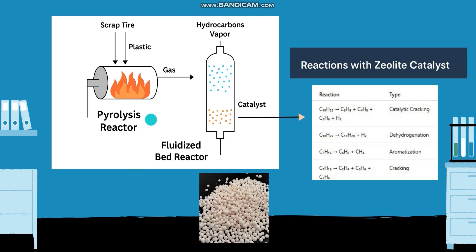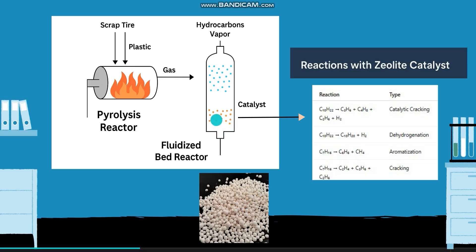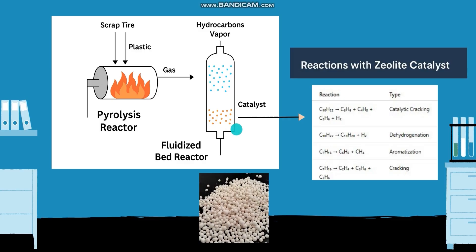The vapor from the pyrolysis reactor enters the fluidized catalytic bed reactor. In the absence of oxygen, the vapors are not burned; instead, they contact the surface of the catalyst. The catalyst contains active sites on its surface that break long-chain hydrocarbons into smaller chain hydrocarbons. These smaller molecules then desorb from the catalyst and proceed to the reactor outlet. In this simulation, we will simulate the fluidized bed reactor specifically.